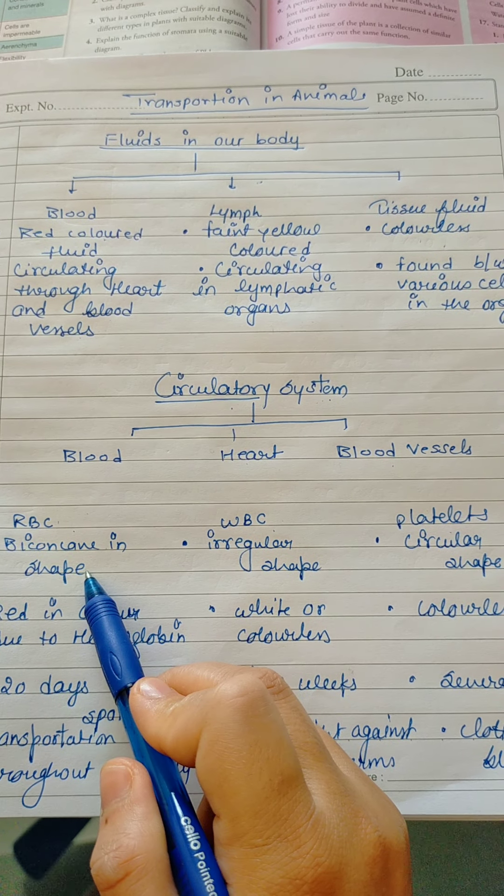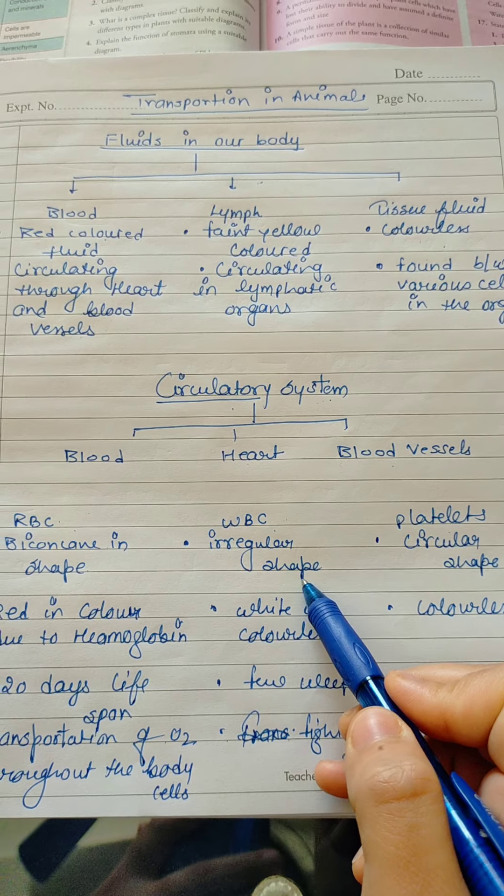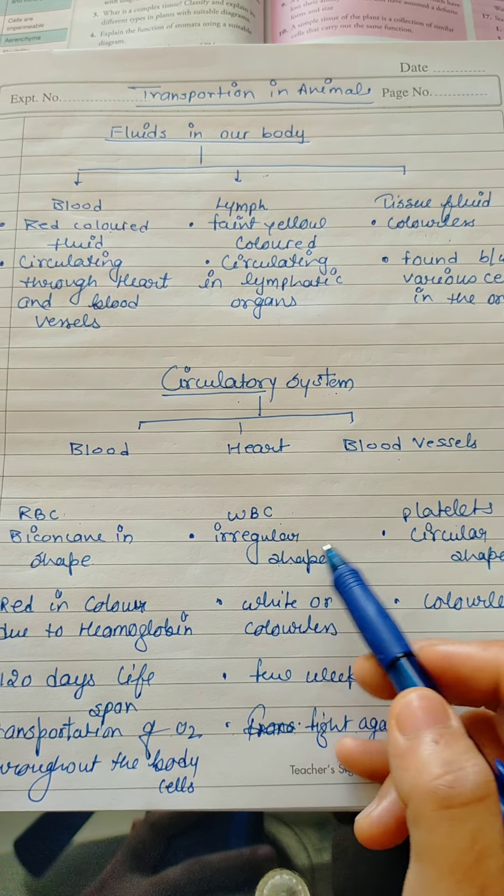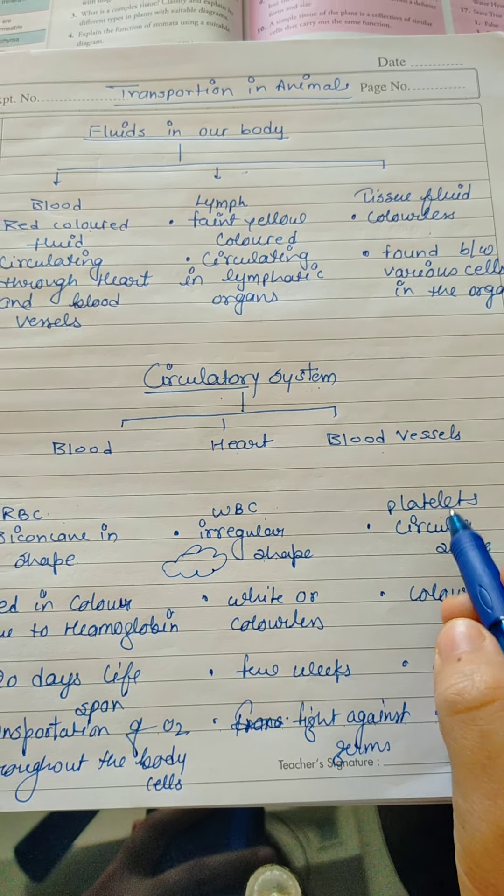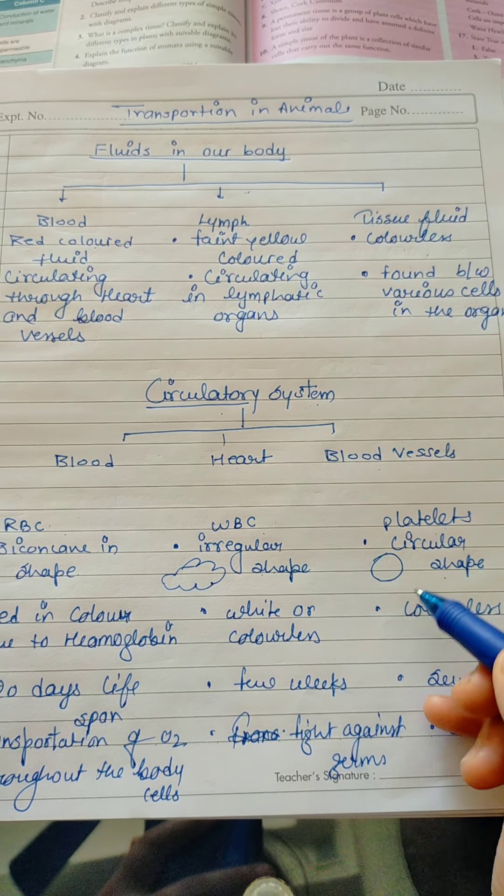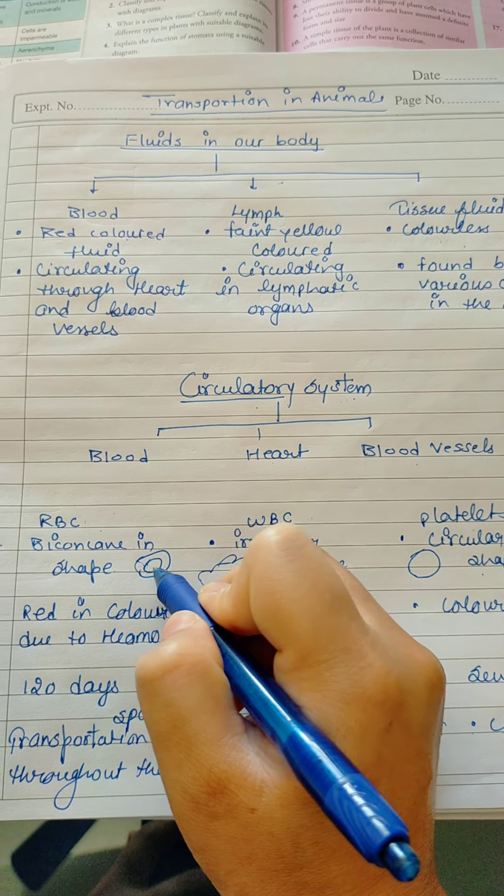RBCs are biconcave shape. WBCs are irregular shape, and can say amoeboid shape. Amoeboid shape is the same as amoeba. Irregular shape like this. Platelets are circular in shape, like this, and a biconcave shape like you have a biconcave lens.